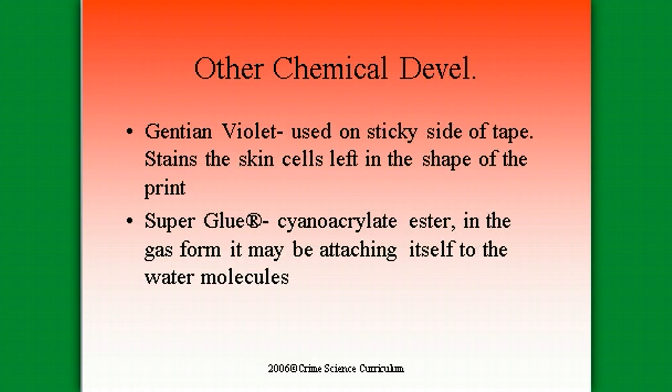We can also use what's called gentian violet. We use the gentian violet powder on the sticky side of tape — it stains the skin cells left in the shape of the print. So if you're working with a surface that's really sticky, you can use the gentian violet powder instead of one of those previous liquids.